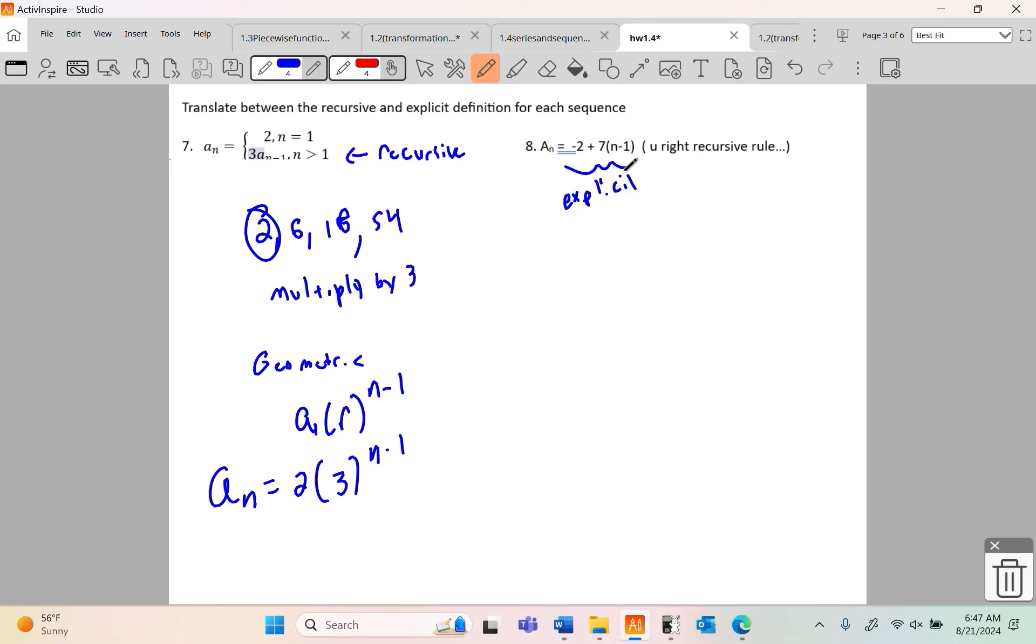I can kind of see it, but let's find the first term because you've got to have the first term for the recursive rule. So a sub 1 is negative 2 plus 7 times 1 minus 1. Well, that's going to be 0, so a sub 1 is just negative 2.